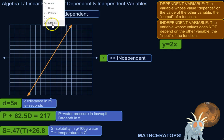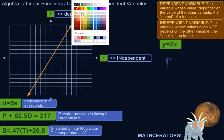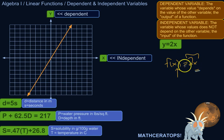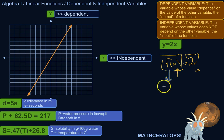So if you have f of x equals 2x, what that means is you plug an x into this machine, and here's what it does to the x — it multiplies it by 2. So if you plug a 3 into this, it goes into the machine, gets multiplied by 2, and becomes a 6. If you plug a 5 into this, it gets multiplied by 2, and it becomes a 10. So this whole thing would be the dependent variable, because it depends on what you plug into it — what you put into the machine.